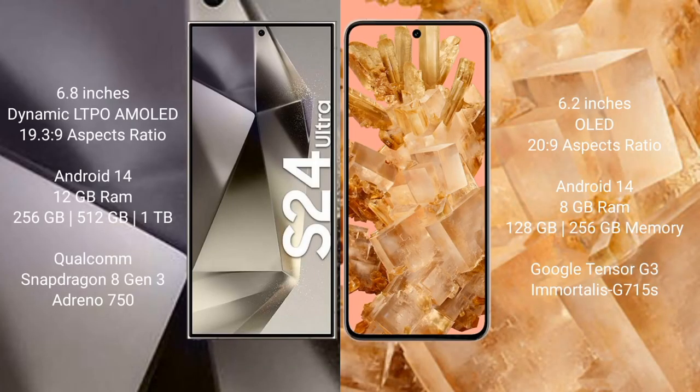The Samsung Galaxy S24 Ultra comes with a 6.8-inch Dynamic LTPO AMOLED display with a refresh rate of 120Hz. The Google Pixel 8 comes with a 6.2-inch OLED display.